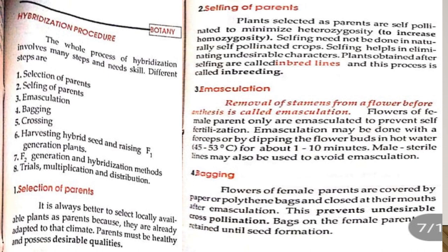Parents must be healthy and possess desirable qualities. Selfing of parents: plants selected as parents are self-pollinated to minimize heterozygosity and to increase homozygosity. Selfing need not be done in naturally self-pollinated crops. Selfing helps in eliminating undesirable characters. Plants obtained after selfing are called inbred lines, and this process is called inbreeding.